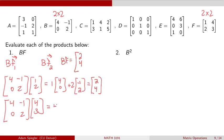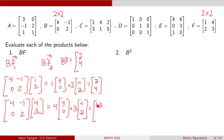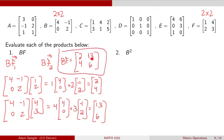For the second column, we take B times the second column vector of F, which is [4, 3]. So we get 4 times the vector [4, 0] plus 3 times the vector [-1, 2]. Doing the arithmetic: 16 minus 3 = 13, and 0 plus 6 = 6. So the second column is [13, 6]. Therefore, the product of matrix B and F is a two by two matrix with top row [2, 13] and second row [4, 6].